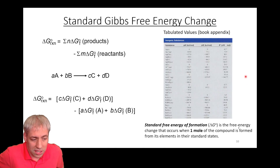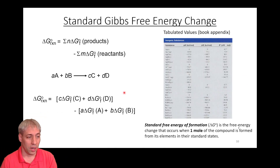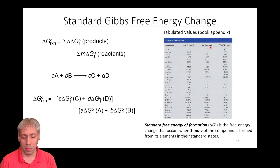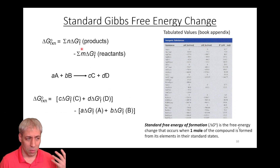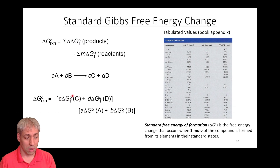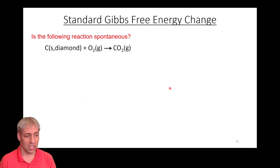We can do this for any reaction: we know the reactants and products, and we have tabulated values in the back of the book — or you can look up Gibbs free energy values. We have enthalpy, entropy, and Gibbs free energy of formation. We take the stoichiometry of each product and reactant and do the calculation.